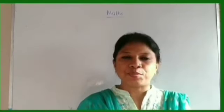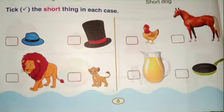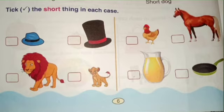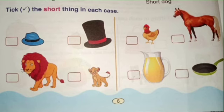Let us see from your book. Look at this picture — tick the short thing in each case. You see comparisons: hat and cap, lion and cub, hen and horse, jug and pan. Put a tick mark on the short one. Do this as your homework. We will meet again in the next class. Bye children, thank you.